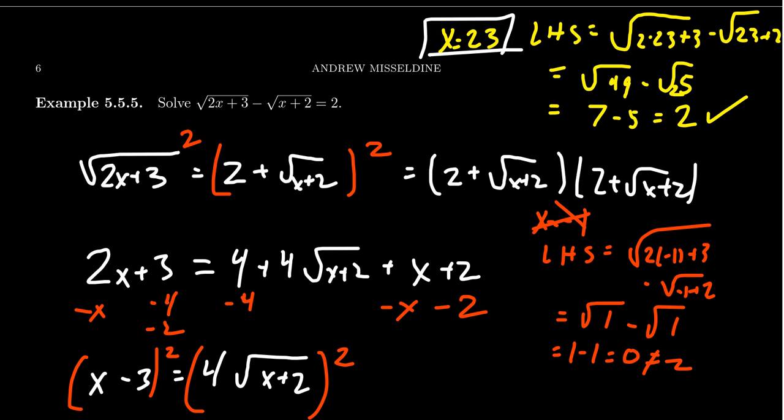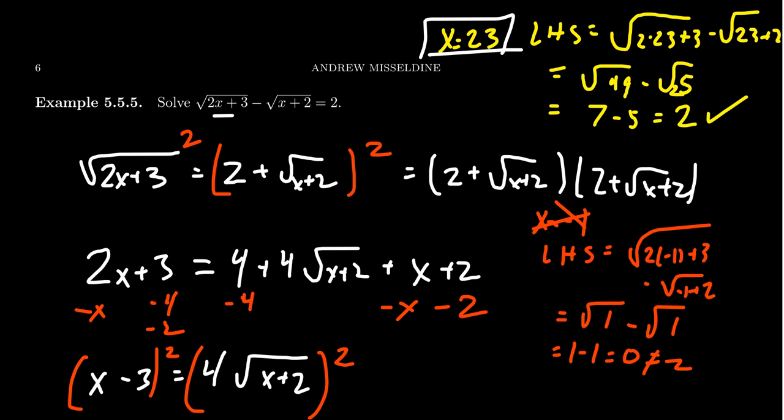When working with radical equations, there are potential issues with domain and range. But the key takeaway is to always check your solutions. To eliminate a square root, square both sides; to eliminate a cube root, cube both sides; for a fourth root, raise to the fourth power. Just make sure you check for party crashers, and you'll be able to solve these radical equations.